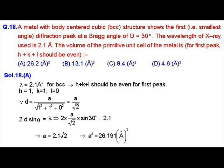Now, we know that for BCC structure, H plus K plus L, that is the sum of the Miller indices should be even for the first diffraction or first peak. So, if we have to consider that H plus K plus L is even, we can assume that H equals to 1, K equals to 1 and L equals to 0. Now, lambda is given to us. We can also find the interplanar distance that is small d.